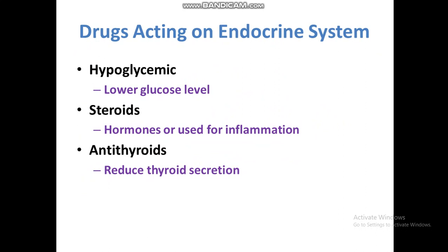Drugs acting on the endocrine system. The endocrine system contains different glands that secrete hormones, neurotransmitters, or compounds directly released into the blood. Hypoglycemic drugs are used to control glucose levels — they act on the pancreas, reducing glucagon production and increasing insulin production, thereby decreasing blood glucose. Steroids are hormones used for inflammation or as hormone replacement therapy and as anti-inflammatory agents.